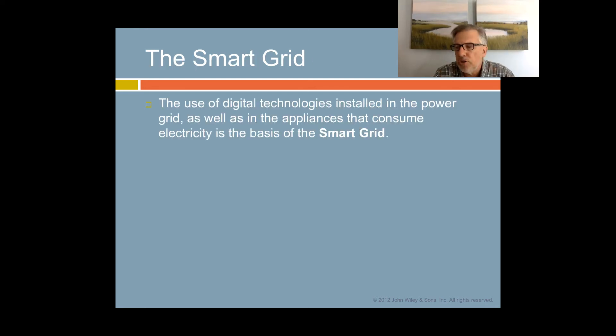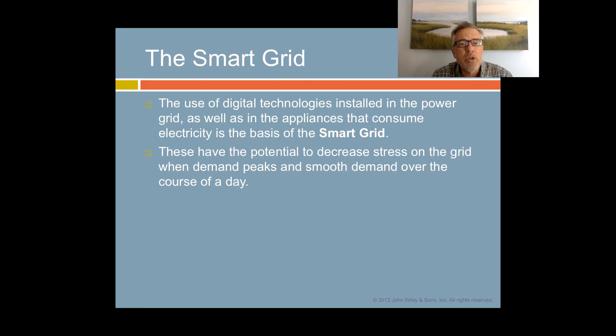Most of the electric infrastructure was built around the two decades after World War II, and it's getting old now. Now that we have digital technologies, many people have realized that digital technologies could, if they're installed in the power grid and in appliances that consume electricity, develop a lot of desirable properties on the grid. They call this the smart grid because of the two-way communication between users and producers.